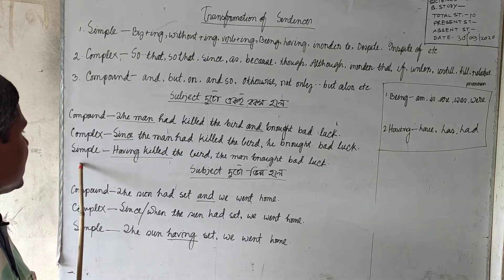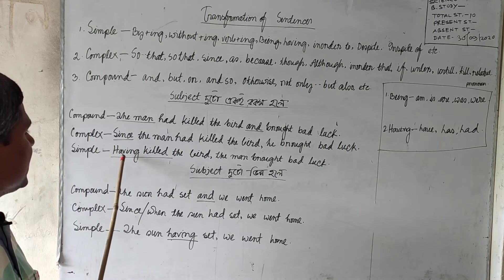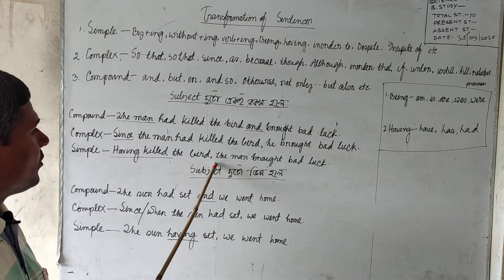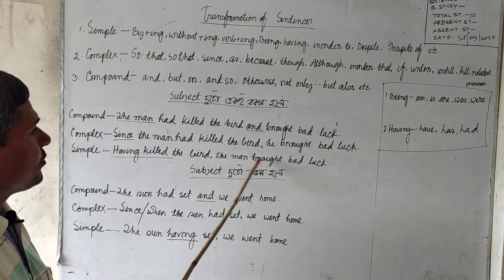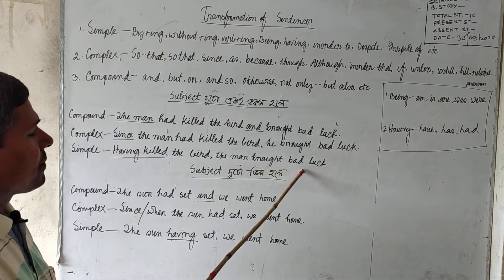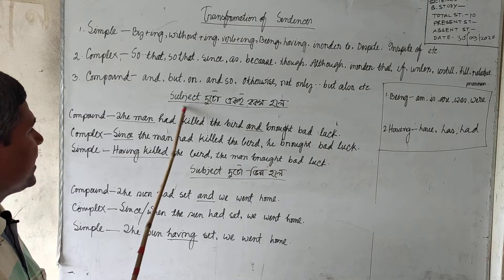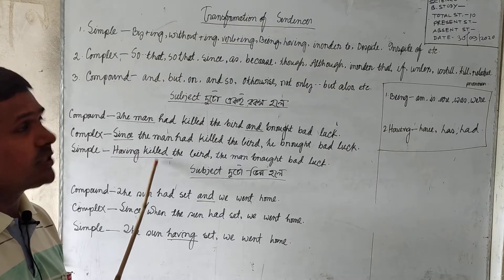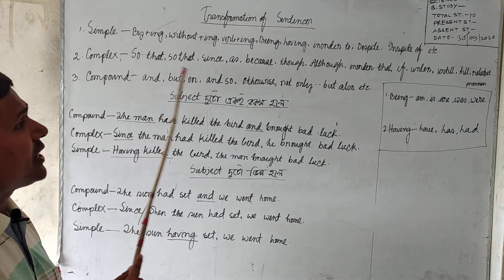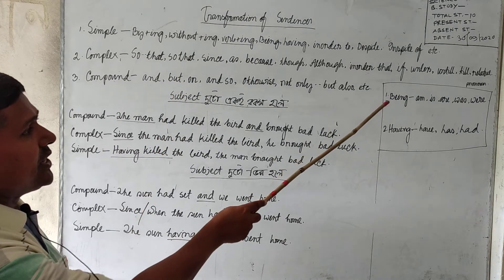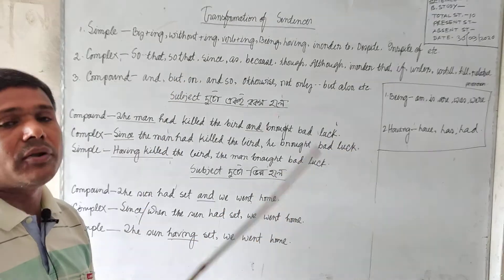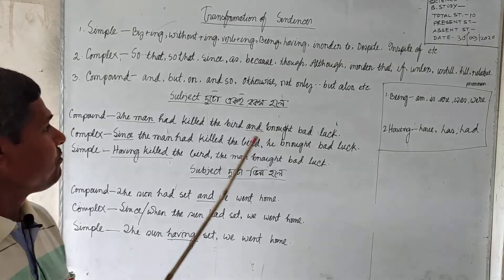The third sentence is the simple sentence. We will write: 'Having killed the bird, the man brought the bad luck.' We will write this third sentence and underline the sign words 'being' or 'having.'